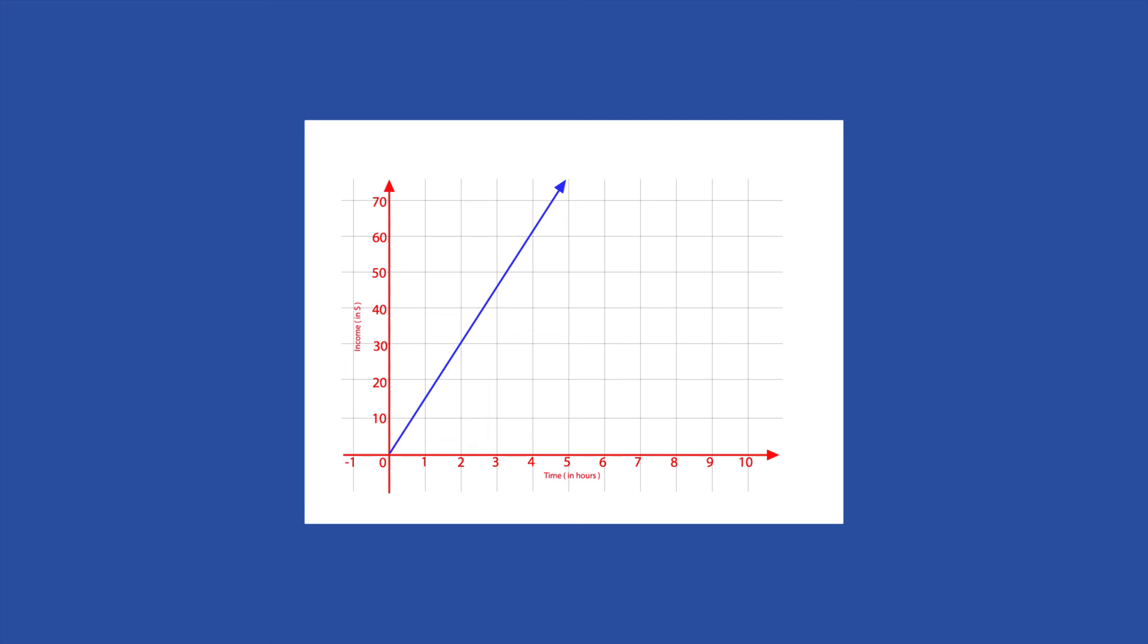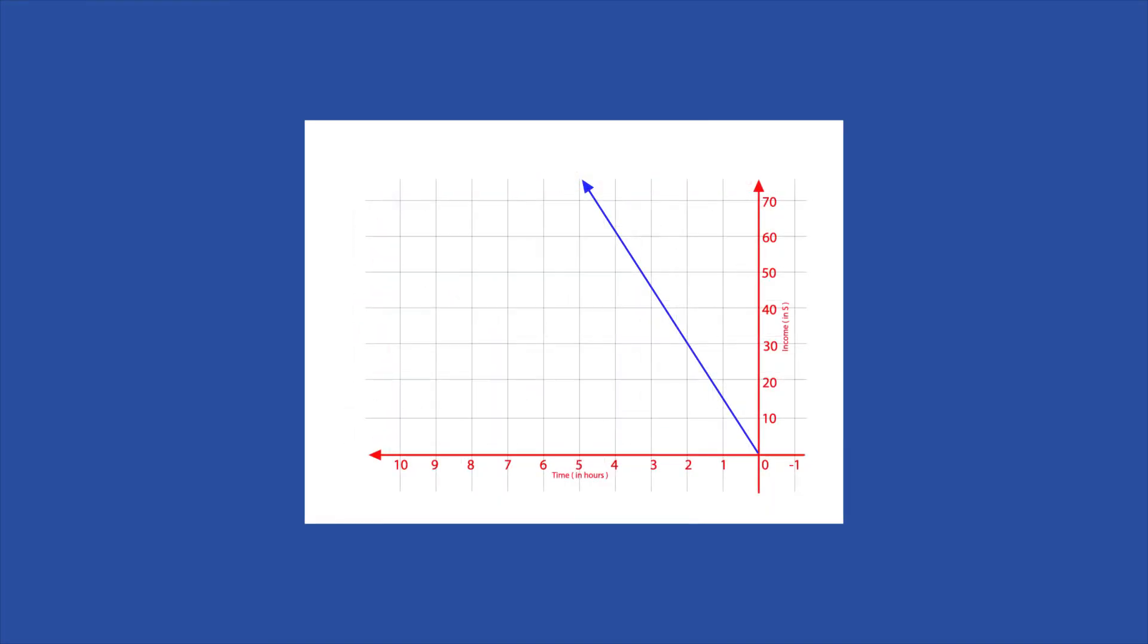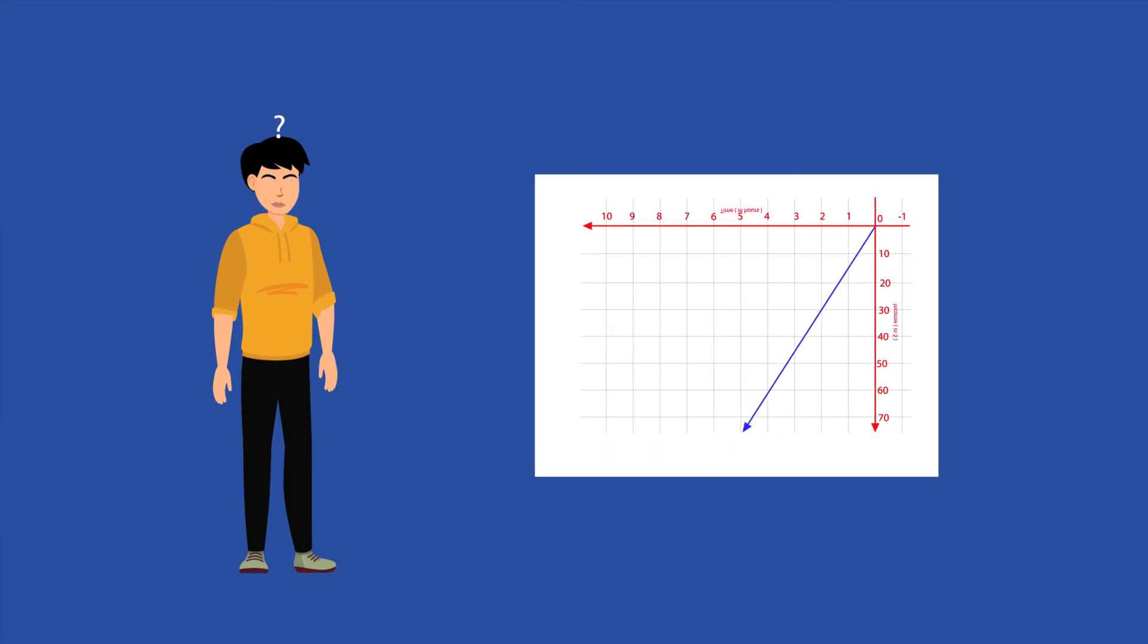Another graphing standard is that numbers should increase as you go up the y-axis and right on the x-axis. Flipping one or more of the graph's axes will also flip the way the graph should be read. Consequently, people will have difficulty interpreting the graph because it's formatted in a way they're not accustomed to.